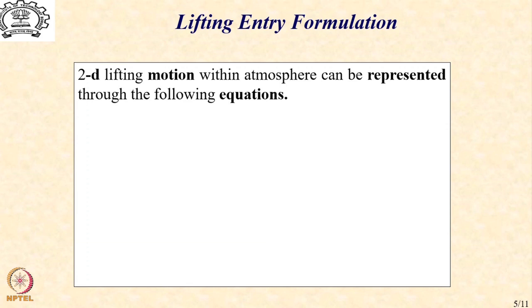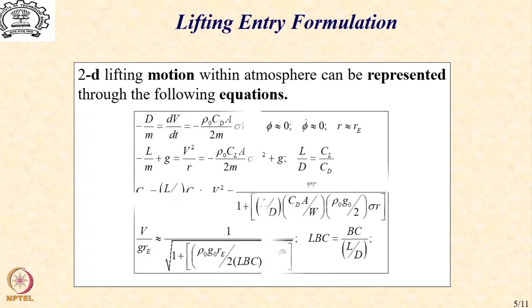As the trajectory is primarily a two-dimensional solution, this motion can be represented in atmosphere through the following equations. So, again we have the same set of equations for the direction of velocity that we have already seen for our ballistic entry. So, again we have the same set of trajectory with specific assumptions that the glide path angle is nearly zero.